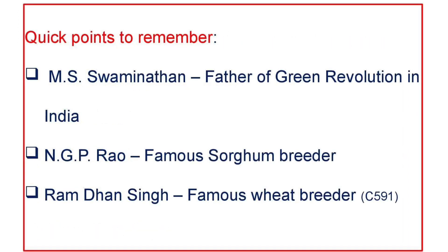Some quick points to remember: M.S. Swaminathan is the father of the Green Revolution in India. N.G.P. Rao is a famous sorghum breeder, and Ramdan Singh is a famous wheat breeder who developed the C591 variety.